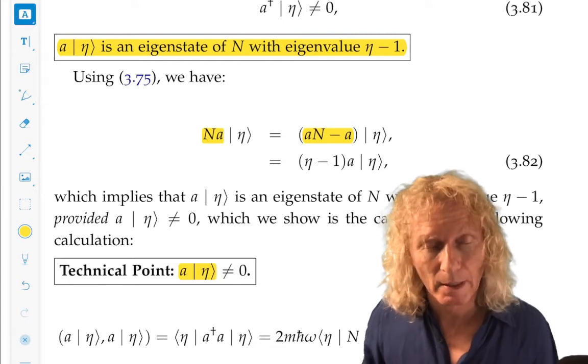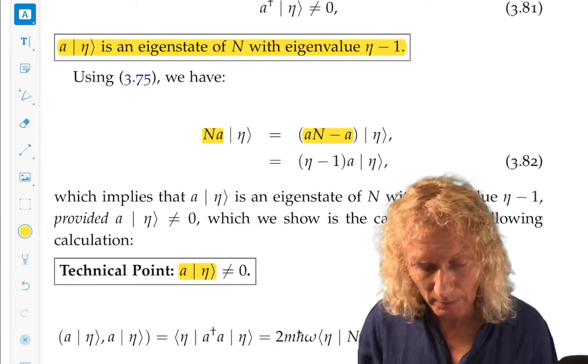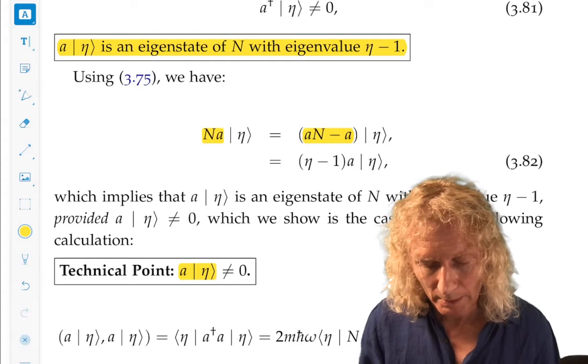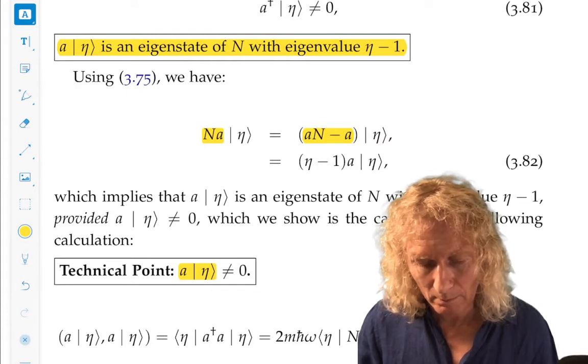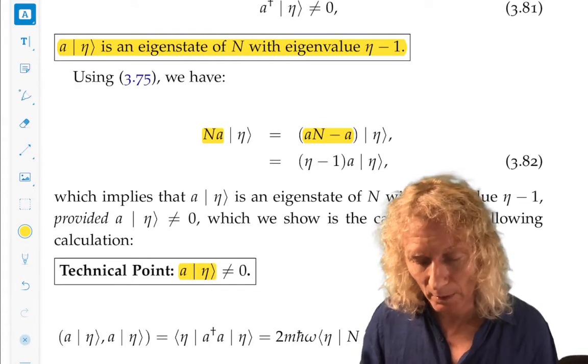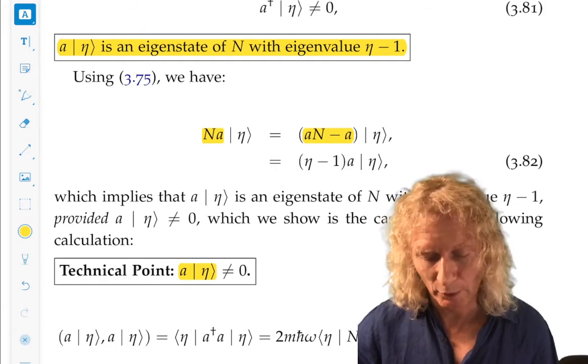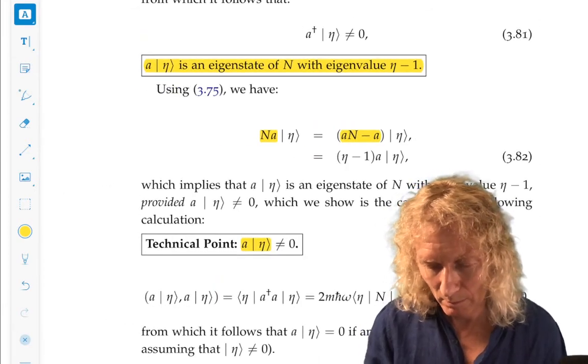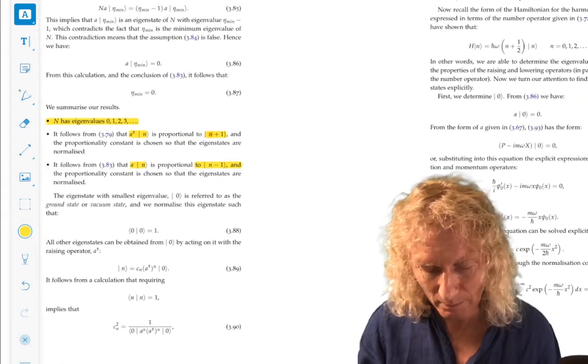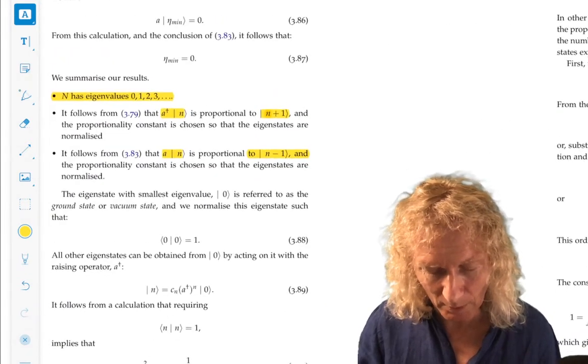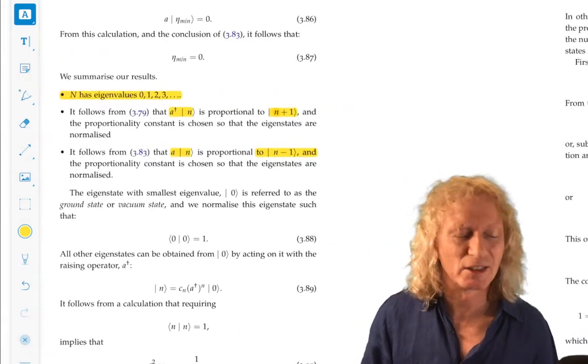So a acting on ket eta is an eigenstate of N with eigenvalue n minus one. I'm just repeating what I just said. Never hurts. Maybe it's a bit tedious sometimes. So that's a good place to stop.